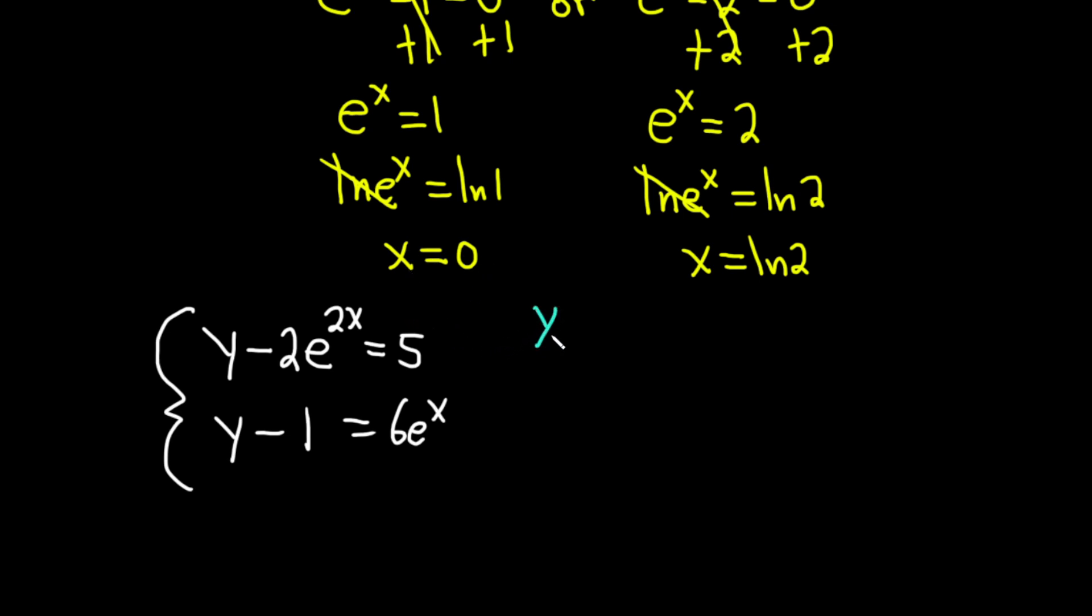So when x is 0, let's think about what happens if we plug 0 into the first equation. Well, e to the 0 is 1. So we're just going to get y minus 2, and this is going to be 1, so it just goes away because it's 1. And that's equal to 5. So that means that y is equal to 7. Just to check, let's plug it into the second equation.